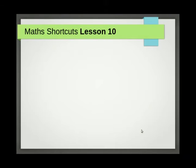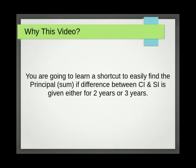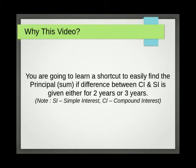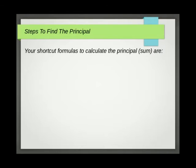Welcome to Max Shortcut Lesson 10 from Banking Careers. You are going to learn a shortcut to easily find the principal (sum) if the difference between CI and SI is given either for two years or three years.